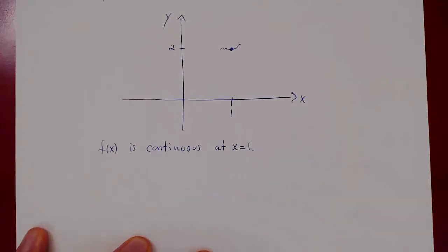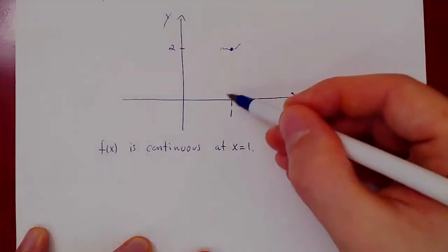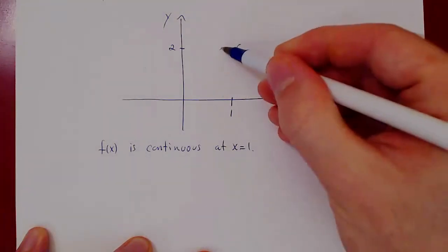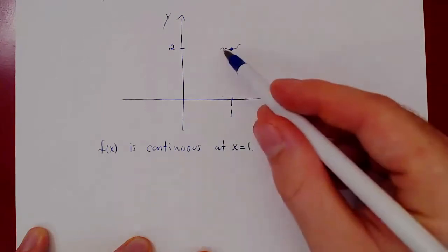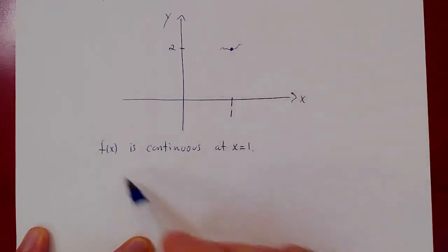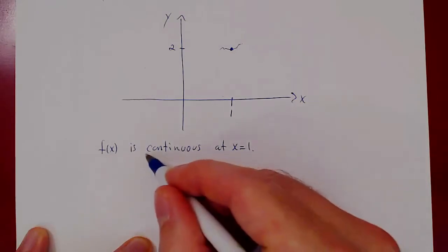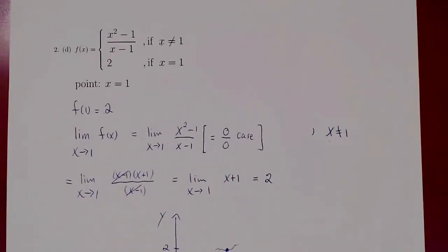Continuity is simply a fancy word for no break. The function is defined, and as x approaches 1 from the left or from the right, the y-value approaches 2 as well. There is no break in the function — everything is nice — so we say f(x) is continuous at x equals 1. That's problem 2D.